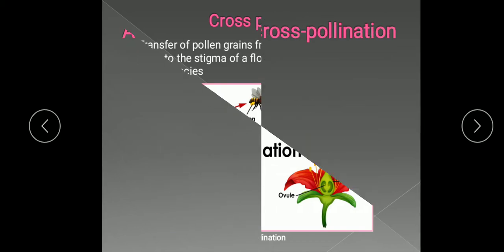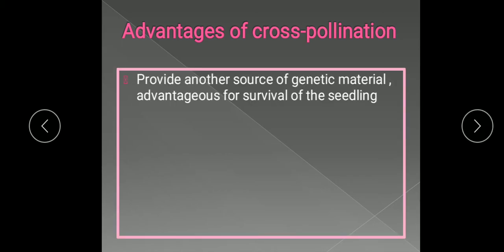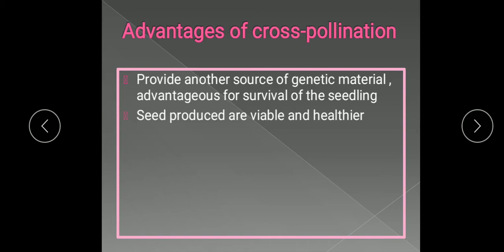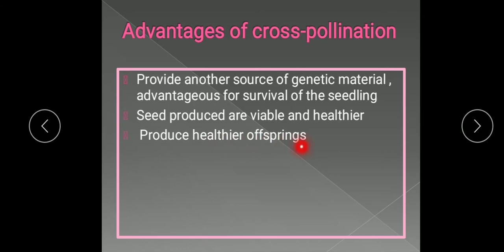What are the advantages of cross-pollination? The seeds produced contain another source of genetic material. In self-pollination, the gametes have the same genetic constitution, but in cross-pollination the flowers are located on two different plants, so both plants have different genetic constitutions — providing another source of genetic variation. It contains genes advantageous for the survival of the seedling, and the seeds produced by cross-pollination are viable, healthier, have better germinating capacity, and produce healthier offspring.